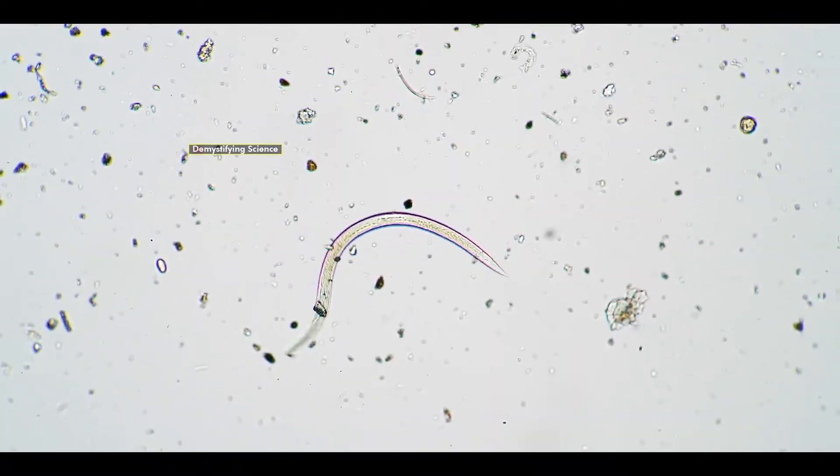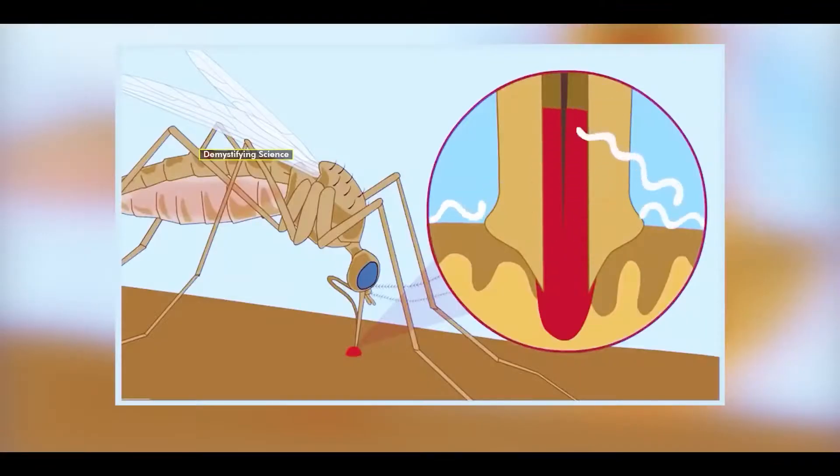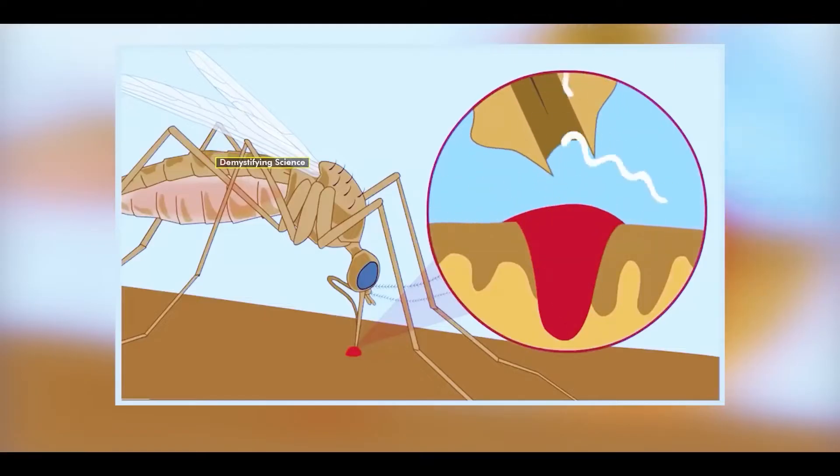If a mosquito carries a specific parasite called a roundworm, this roundworm can be transmitted to humans when the mosquito bites them.